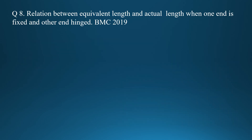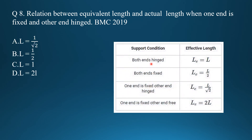Question seven: the relation between equivalent length and actual length when one end is fixed and another end is hinged. There is a chart with four conditions: both ends hinged — Le = L; both ends fixed — Le = L/2; one end fixed and another hinged — Le = L/√2. Option A is correct.